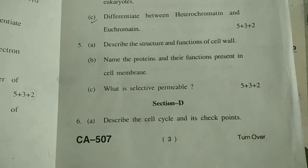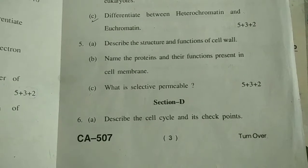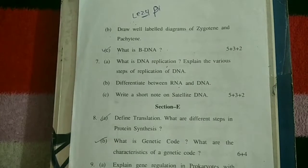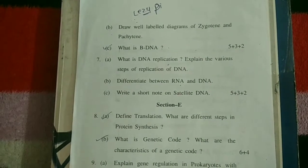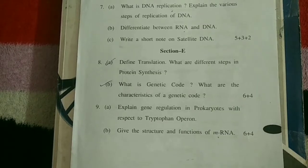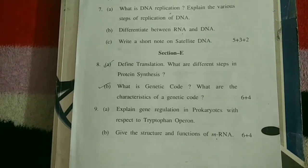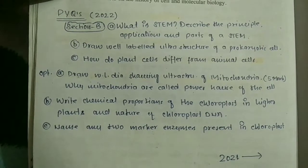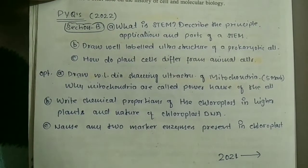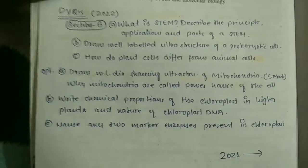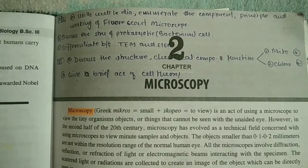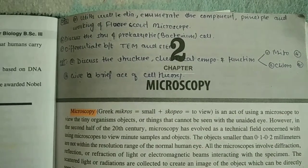Section D is similar to Sections B and C — it also contains two questions and we have to do one. Now these are all the questions from 2022 and 2021. This is Section B of 2021.